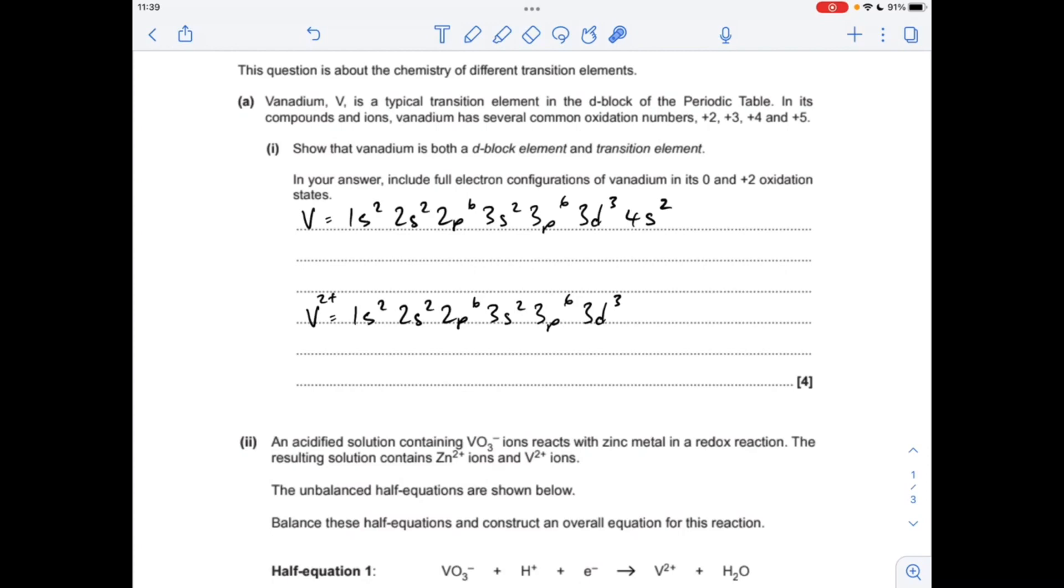The first part is the electron configuration for vanadium in its zero oxidation state. This helps explain why vanadium is a d-block element. The electrons highlighted, the 3d3 electrons, are the highest energy electrons and they are in a d sub-shell. It's d-block because its highest energy electrons are in a d sub-shell.